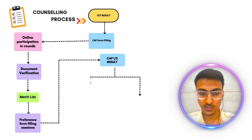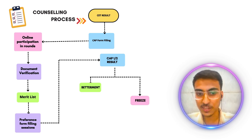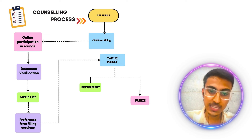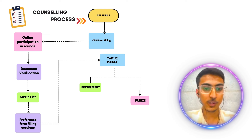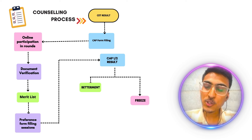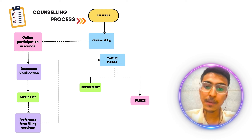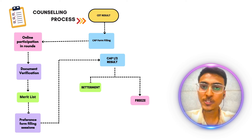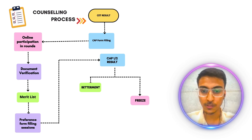CAP round का result आने के बाद आपके पास दो option होते हैं — एक होता है betterment का option, एक होता है freeze का option। Betterment मतलब — आपको जो seat मिली है वो आपको चाहिए, लेकिन अगर next round में उससे भी अच्छी seat मिल सकती है, तब वो prefer करोगे — उसको बोलते हैं betterment। Freeze का मतलब — आपको जो seat मिली है आपने वो accept कर ली, यही मुझे चलेगा, मैं इसी में admission लेना चाहता था और मुझे वहीं मिल गया — तो उसको हम freeze बोलते हैं।